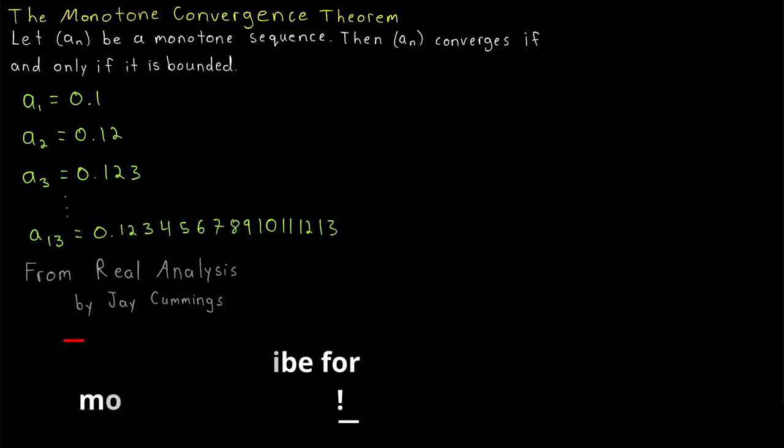Let's take a look at a really cool example of applying the monotone convergence theorem. The example we'll look at is from the textbook Real Analysis by Jay Cummings. Quickly recall that the monotone convergence theorem tells us that a monotone sequence converges if and only if it is bounded.